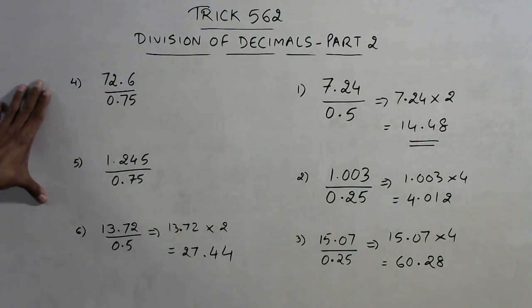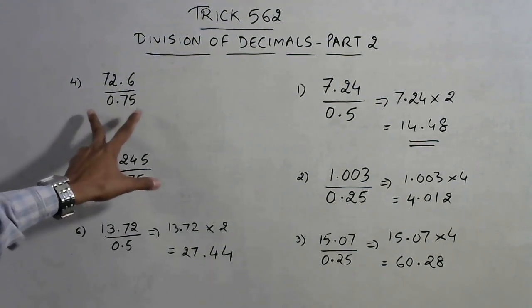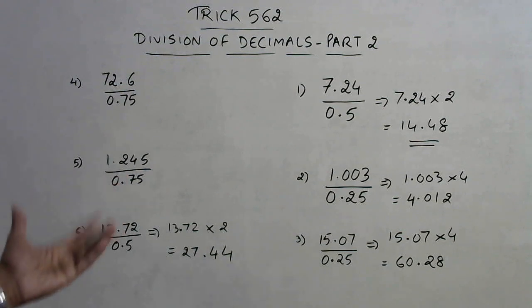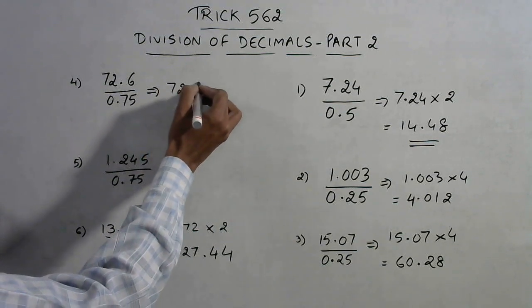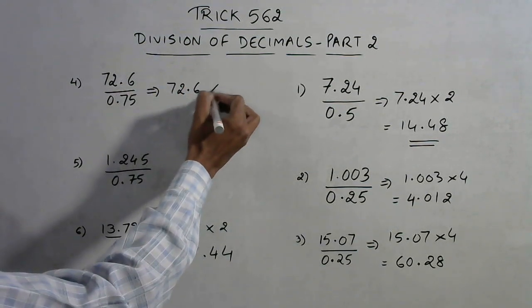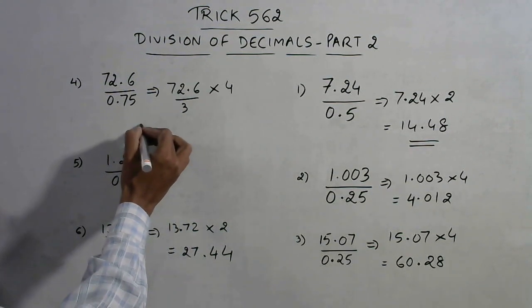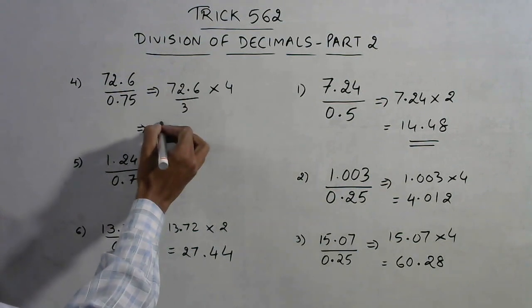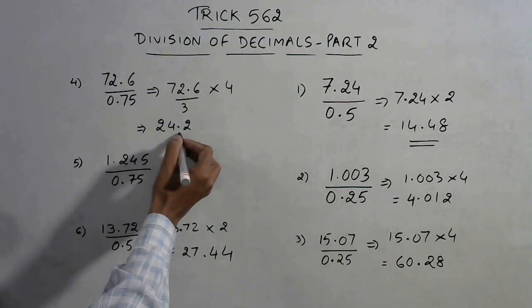And again you need to understand what 0.75 is. Once you know 0.75 is 3 upon 4, that is 3 quarters, the problem becomes very simple. And this problem is actually the number in the numerator multiplied by 4 and divided by 3. So what you need to do here is to divide by 3 first: 3, 6, 4 and 2, so 24.2.